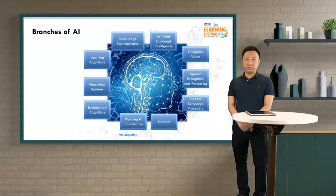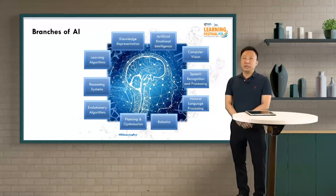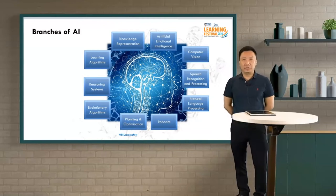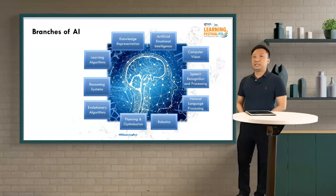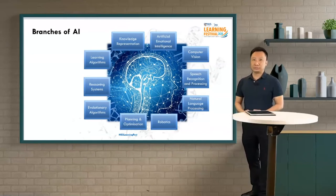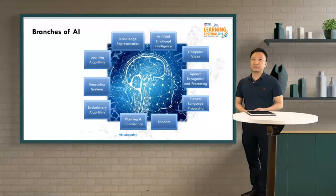First, an introduction to AI itself. AI is a very big and broad term with several branches. For example, computer vision — an example would be object detection and object recognition from video and image data. Next, speech recognition and processing — an example would be transcription from audio data, meaning transcribing audio data to text. Then natural language processing — an example would be machine translation from one language to another from text data.